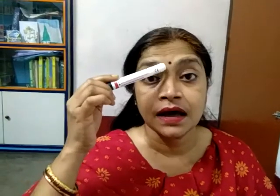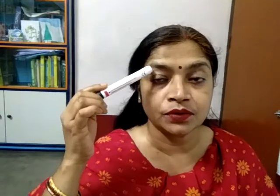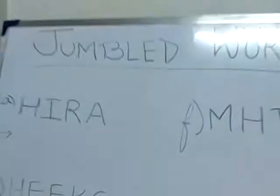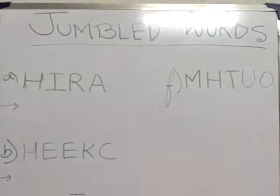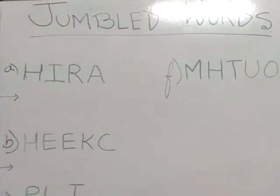Once more: hair, forehead, eyebrow, eye, nose, cheek, mouth, lip, chin, ear. Now look at the whiteboard — jumble words. What is the spelling of each word?